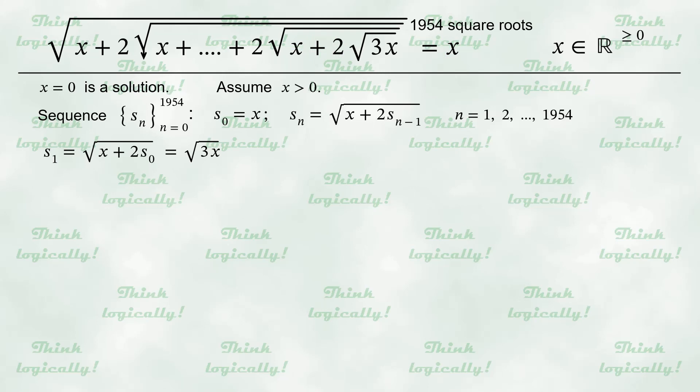This is exactly the last square root in the left-hand side of the given equation. Let's see what we get for S sub 2. Again, we apply the recursion formula, substitute the expression for S sub 1. And the result is just the second last square root in the left-hand side of the given equation. And we continue the process involving more and more parts of the equation into the expression for S.